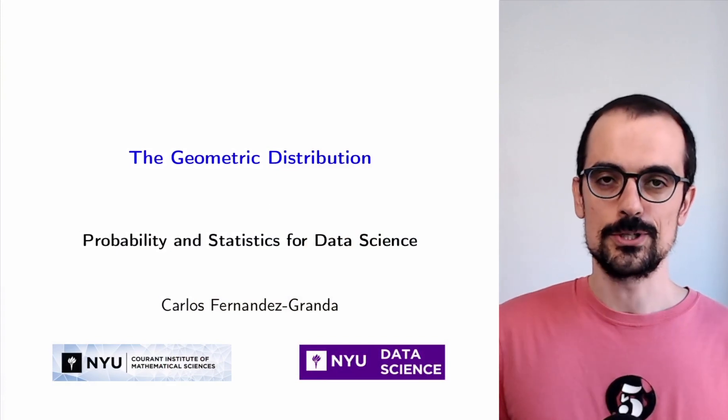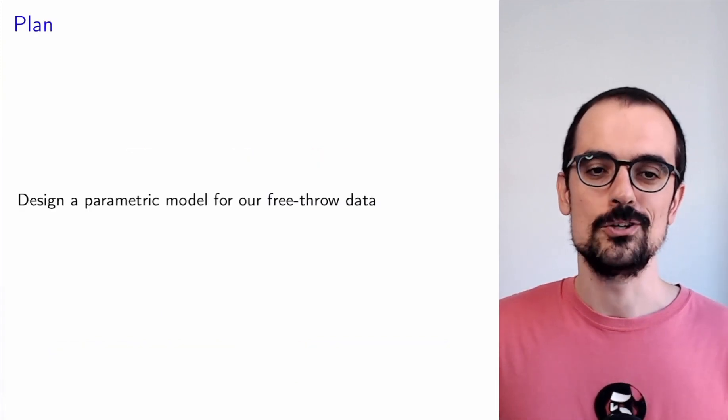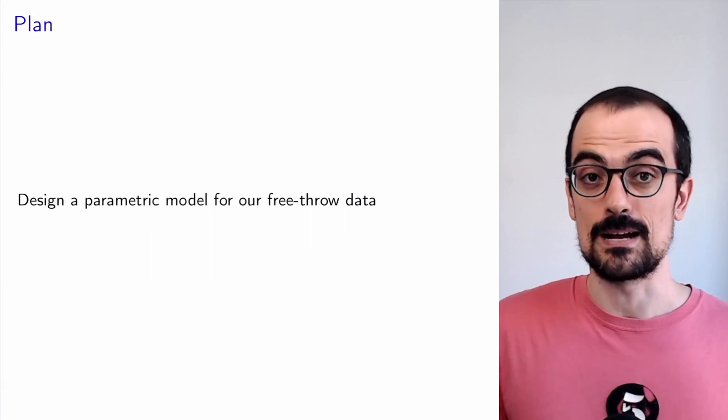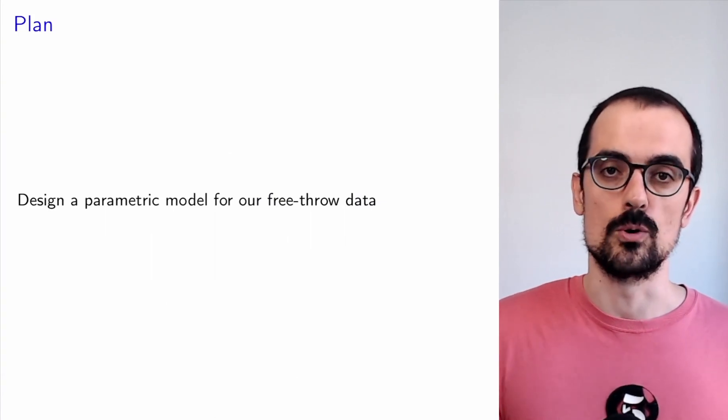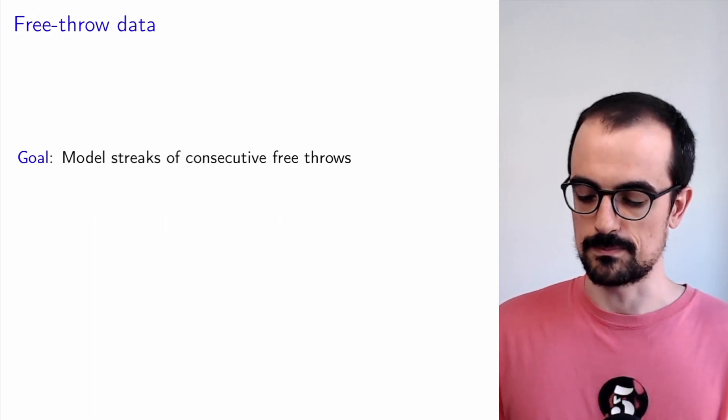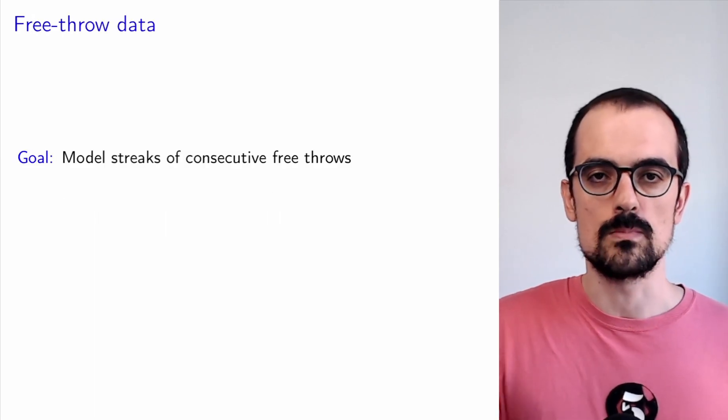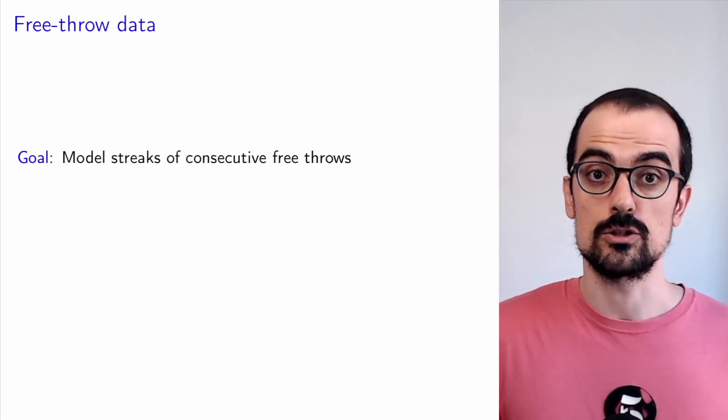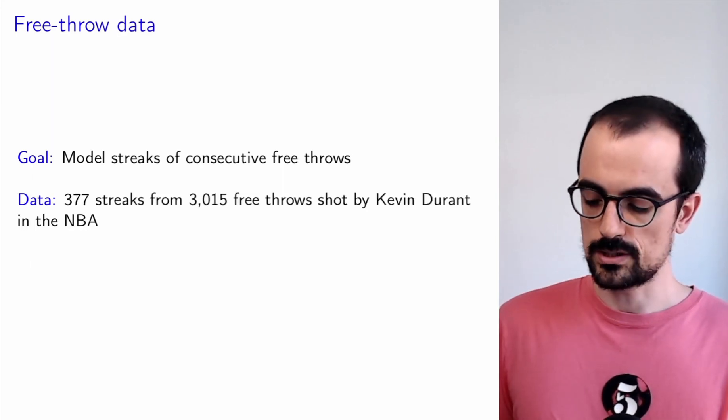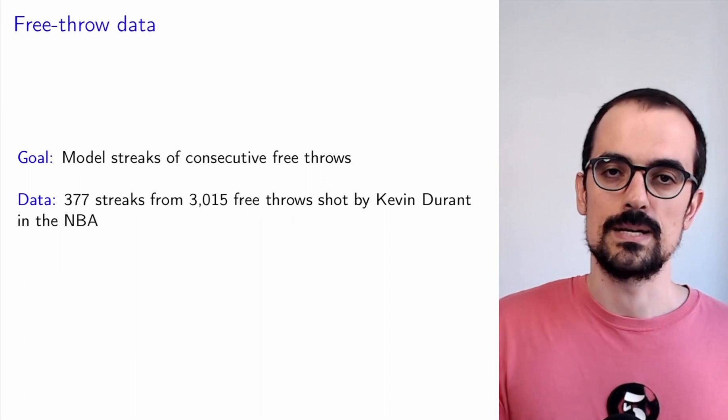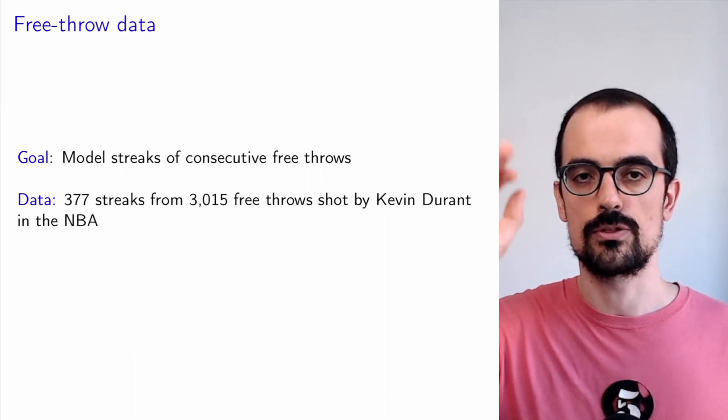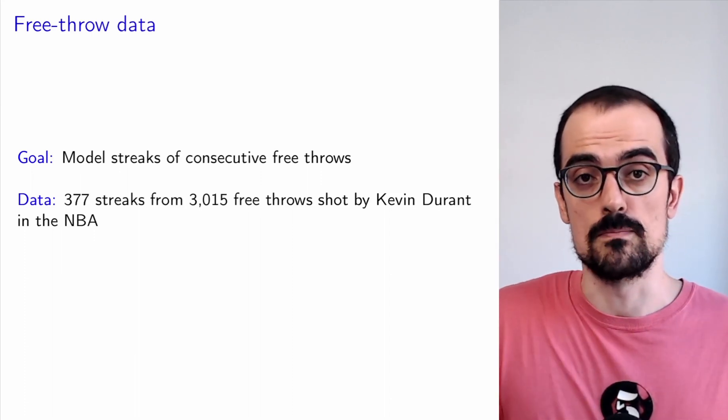We're going to talk about the geometric distribution, but our main goal is to design a parametric model. We're going to take as a motivating example our free throw data example. We want to model streaks of consecutive free throws which were shot by Kevin Durant in the NBA. A streak is the number of consecutive free throws that he made before missing.